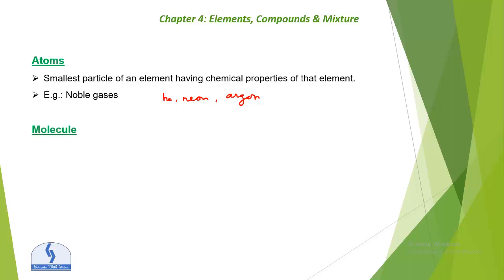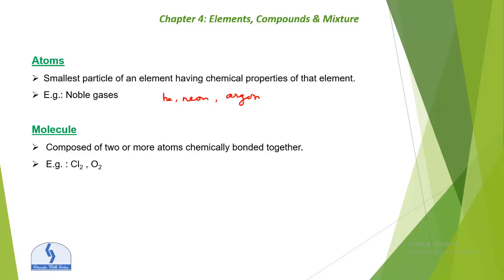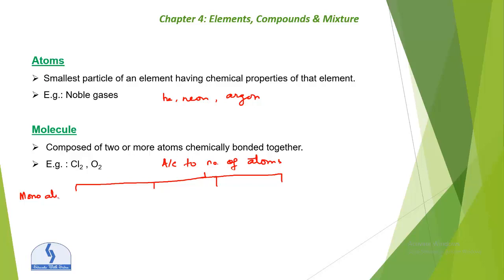A molecule is basically composed of two or more atoms chemically bonded together. Examples are chlorine molecule Cl2 and oxygen molecule O2. According to the number of atoms, molecules are classified into four types: mono-atomic elements, diatomic molecules, triatomic molecules, and polyatomic molecules.